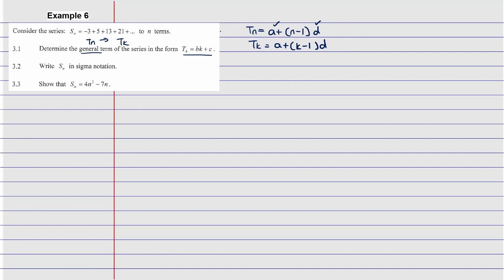For 3.1, we need a and d. Our a is negative 3. To find d, we calculate: 5 minus negative 3 equals 8, and 13 minus 5 equals 8, so d equals 8. Substituting: t_k equals negative 3 plus open bracket k minus 1, times 8. Distributing the 8 gives: t_k equals negative 3 plus 8k minus 8, which simplifies to t_k equals 8k minus 11.